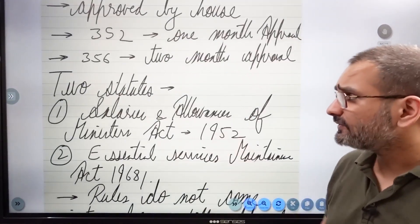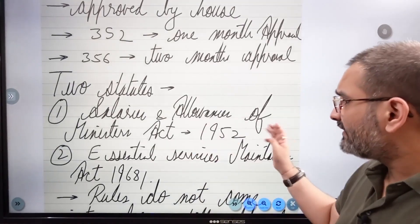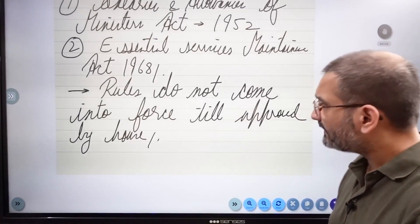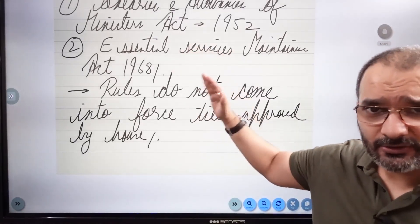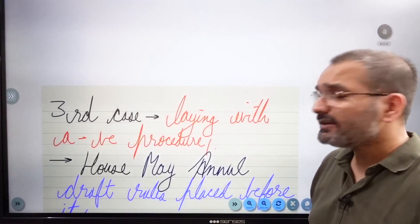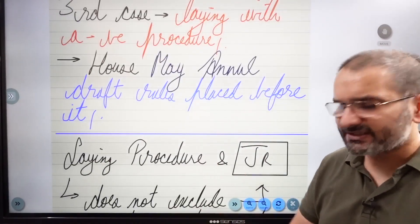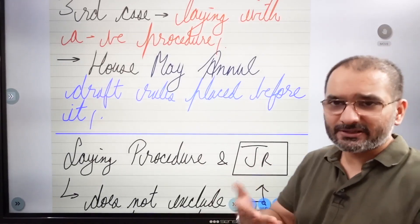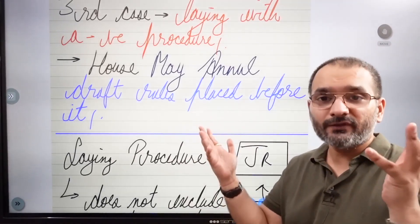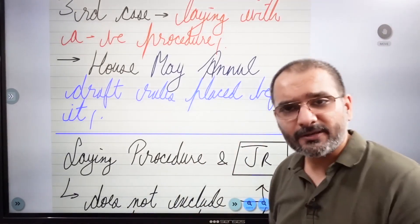Two statutes worth mentioning: the Salaries and Allowances of Ministers Act 1952 and the Essential Services Maintenance Act 1968 — rules under these acts do not come into force until approved by the house. The third kind is laying with a negative procedure. Here, the house must annul draft rules placed before it — it is a check on the executive. Ministers want to make rules freely, but the house checks them. If a negative resolution is passed, the draft rules will be completely annulled.